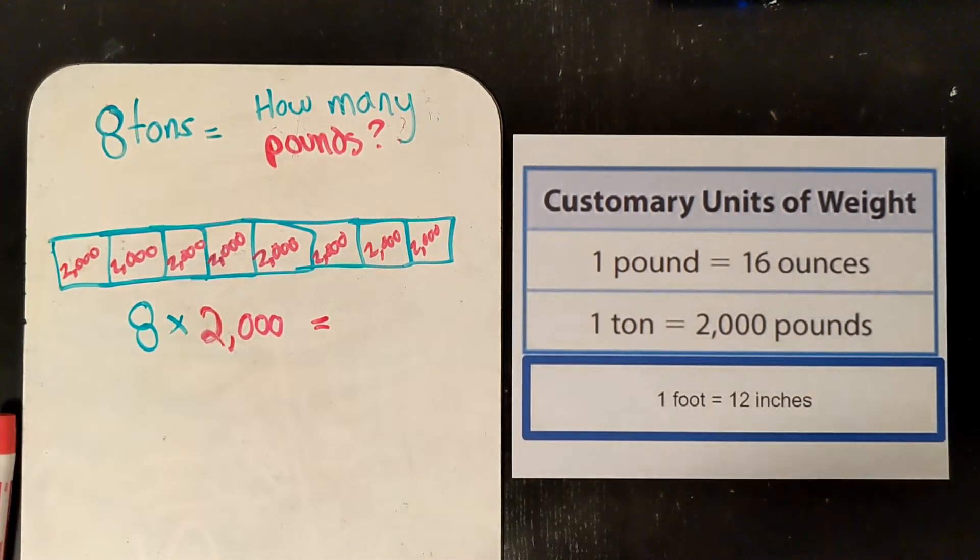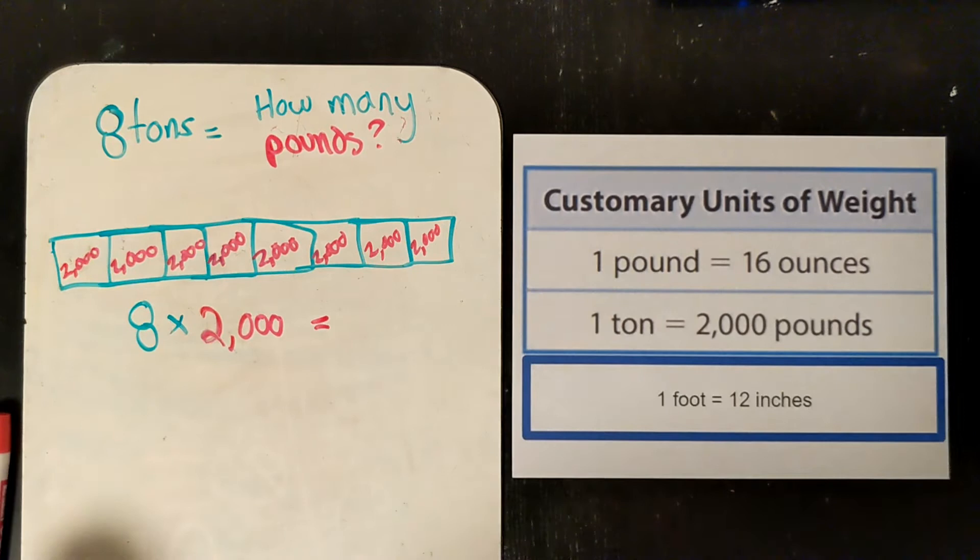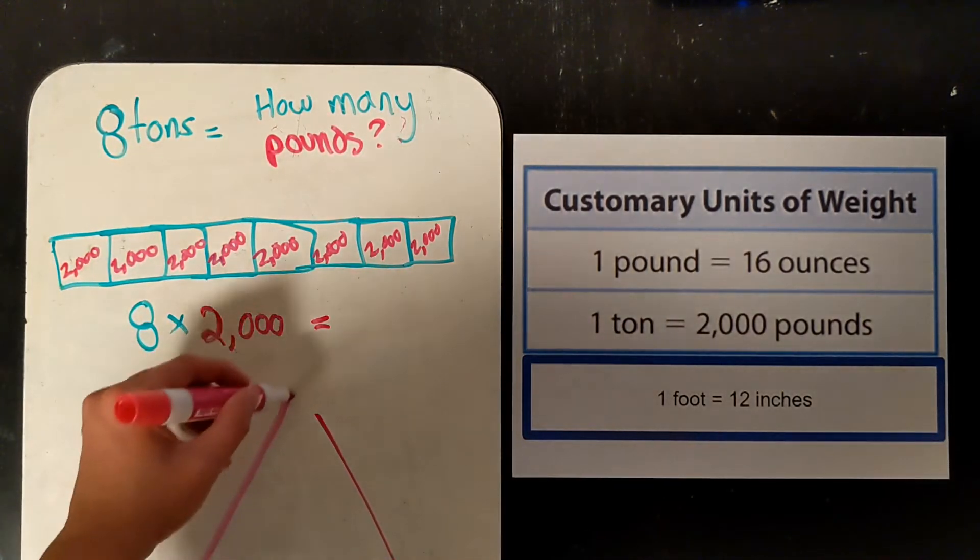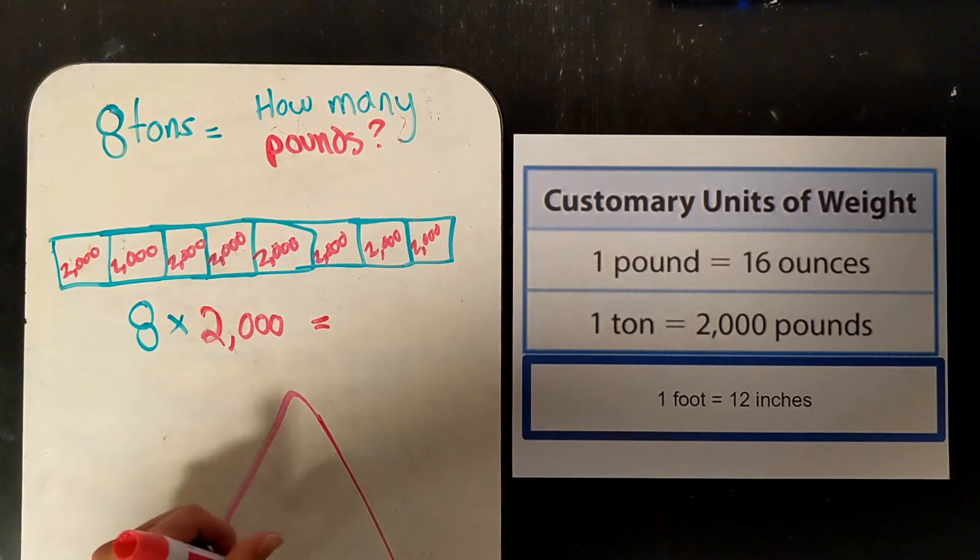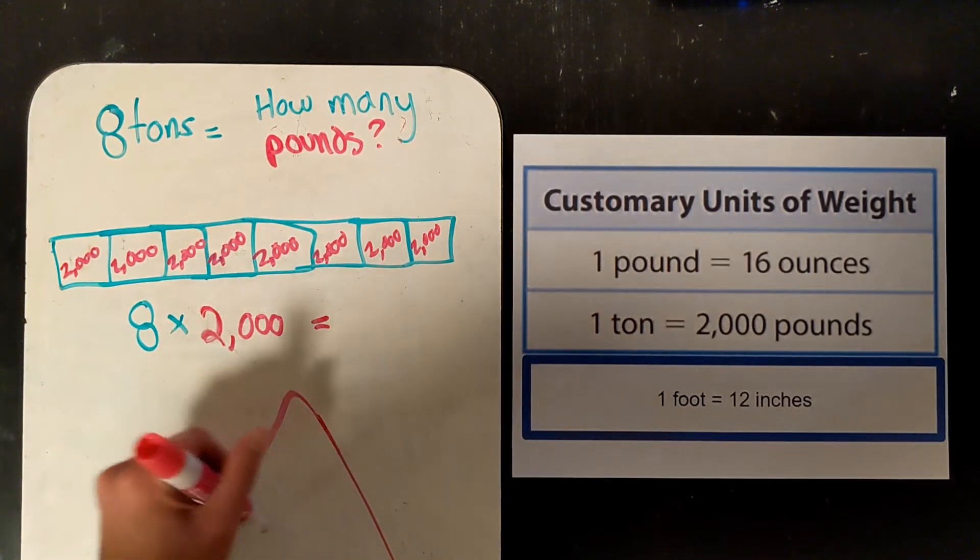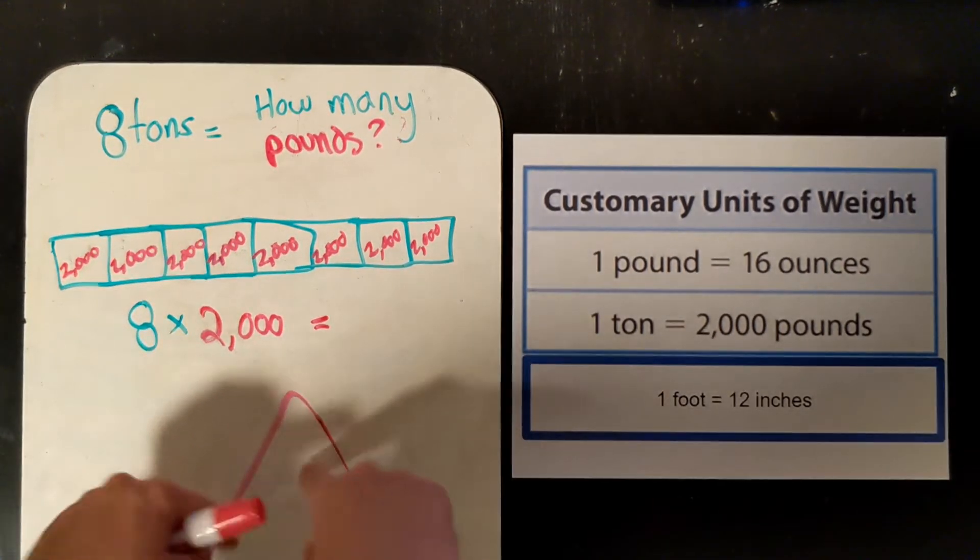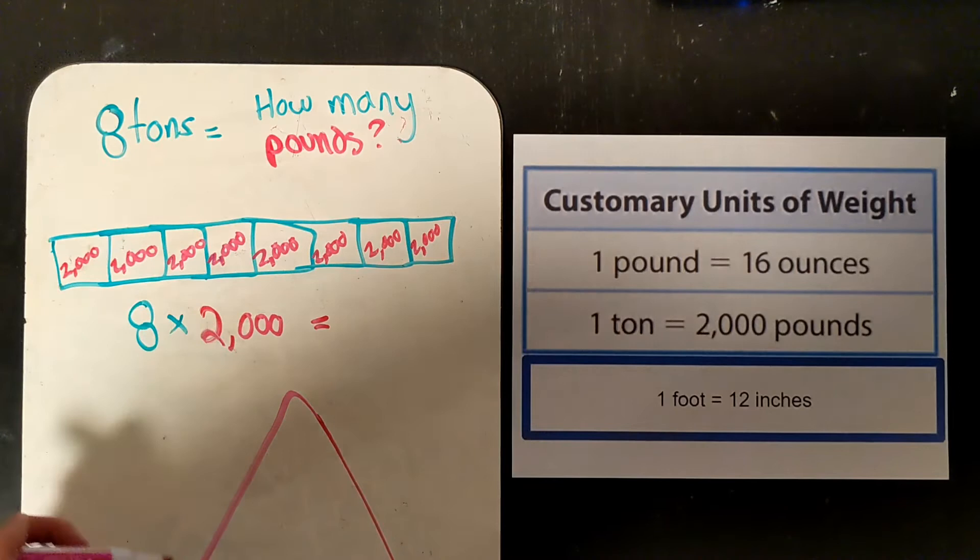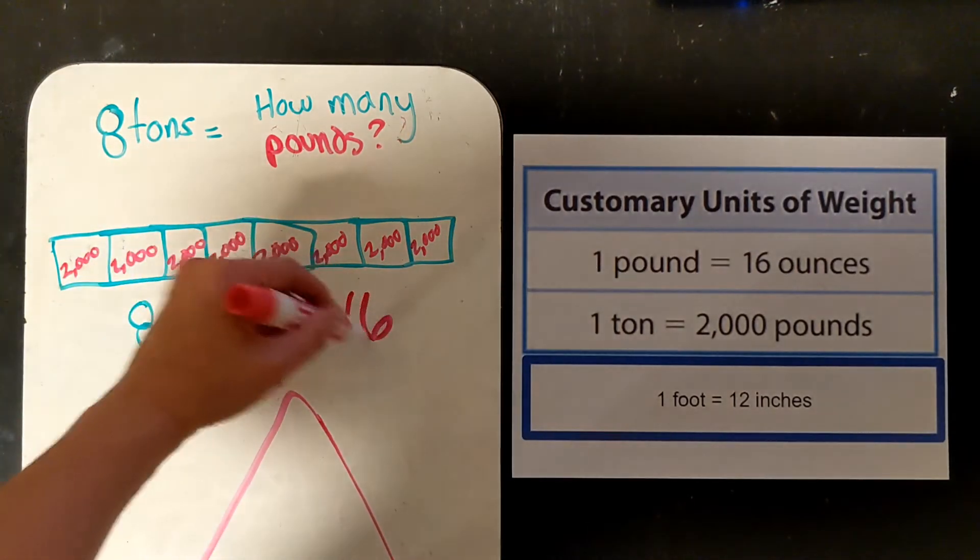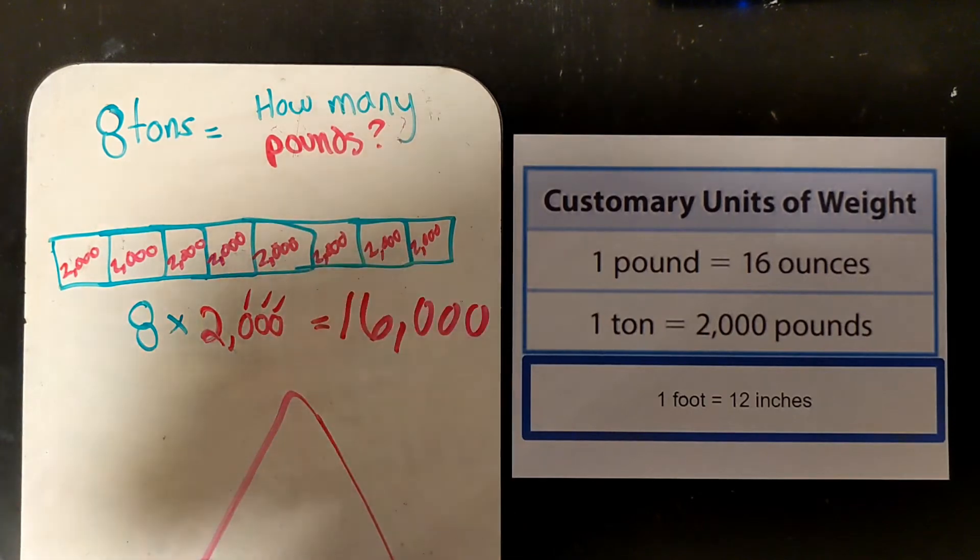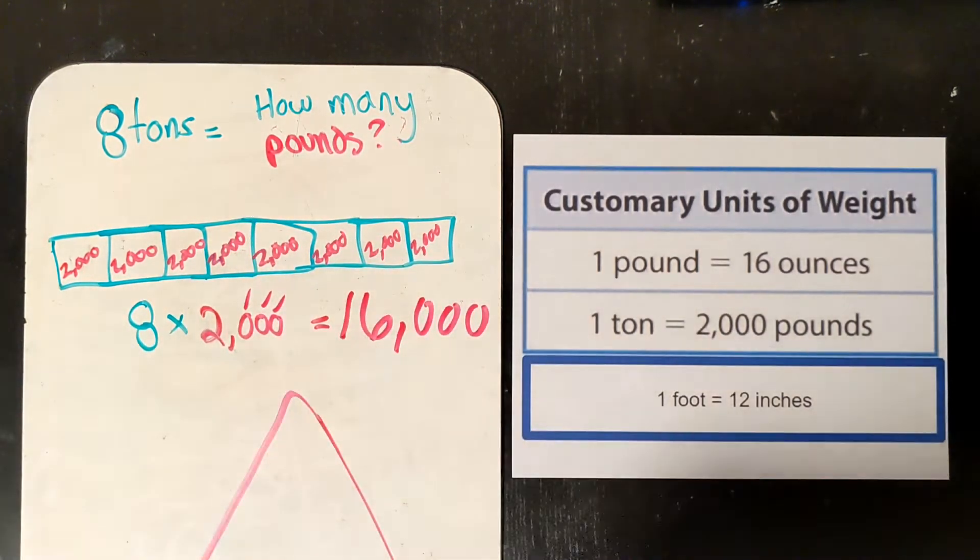I'm going to do 8 tons times 2,000 to find out how many pounds this is. So I want you to try that, pause the video, come back and check it. And to put this on a triangle, we're at the bottom of the triangle here. So we're doing 8 tons, 2,000 pounds in each ton to find our bigger number. We're multiplying because we know our smaller numbers, and we're going to end up with something really big. 8 times 2 is 16. And then add 1, 2, 3.